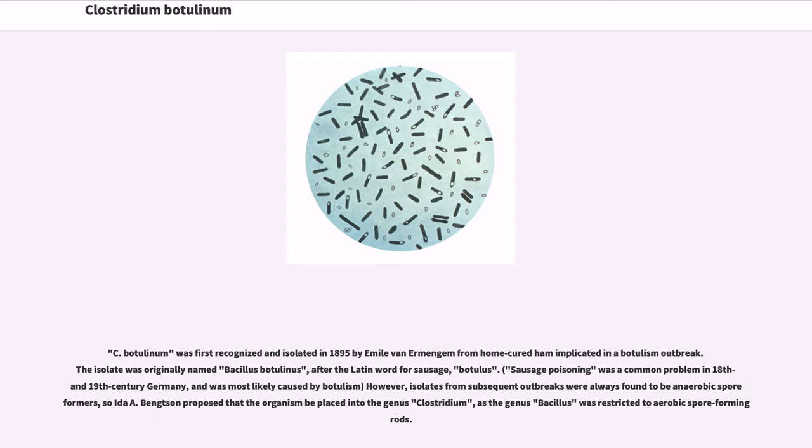C. botulinum was first recognized and isolated in 1895 by Emile van Ermengem from home-cured ham implicated in a botulism outbreak. The isolate was originally named Bacillus botulinus, after the Latin word for sausage, botulus. However, isolates from subsequent outbreaks were always found to be anaerobic spore formers, so Ida A. Bengtson proposed that the organism be placed into the genus Clostridium, as the genus Bacillus was restricted to aerobic spore forming rods.